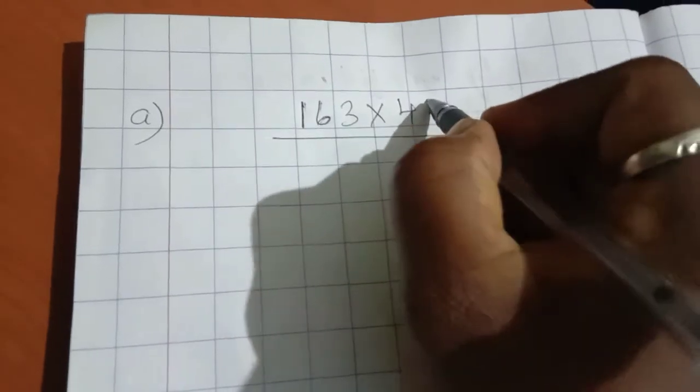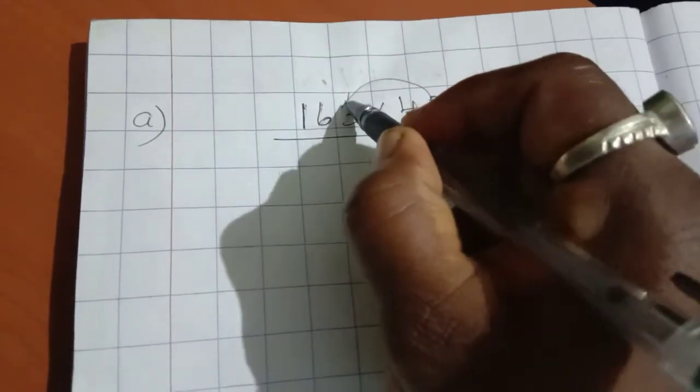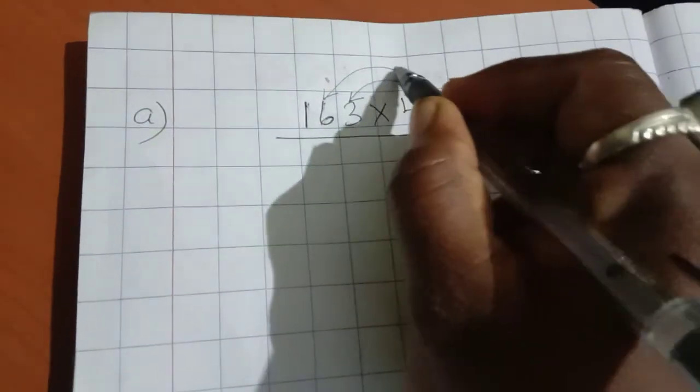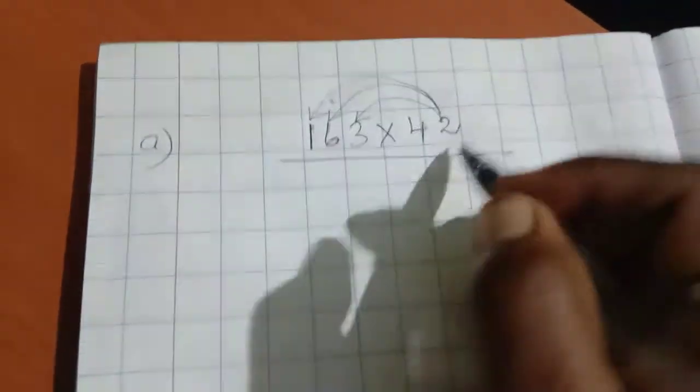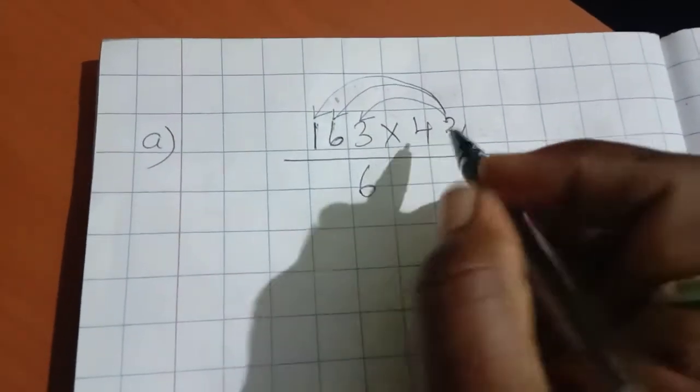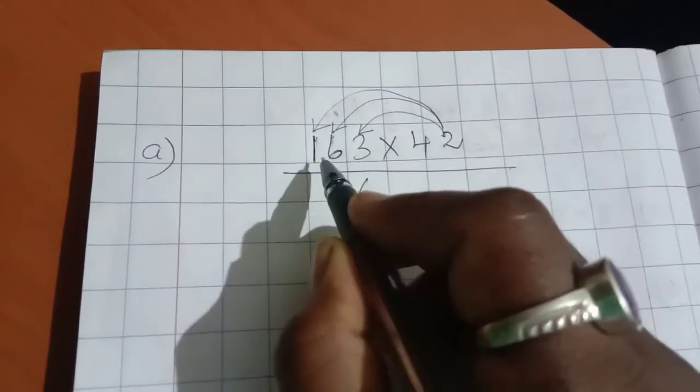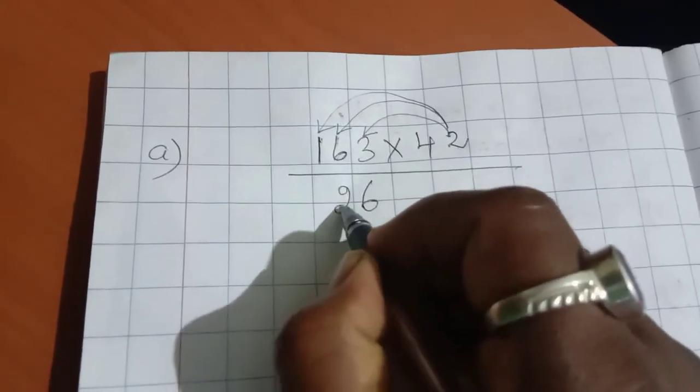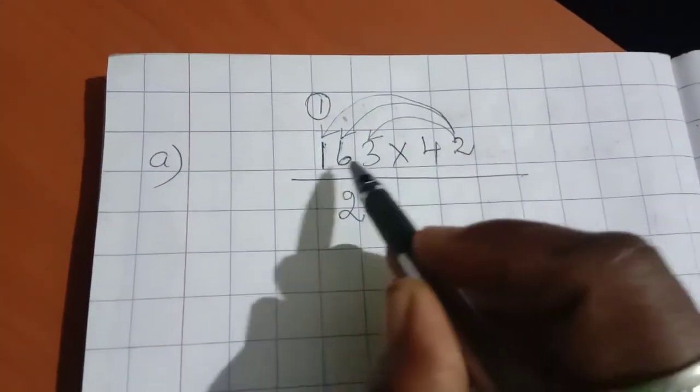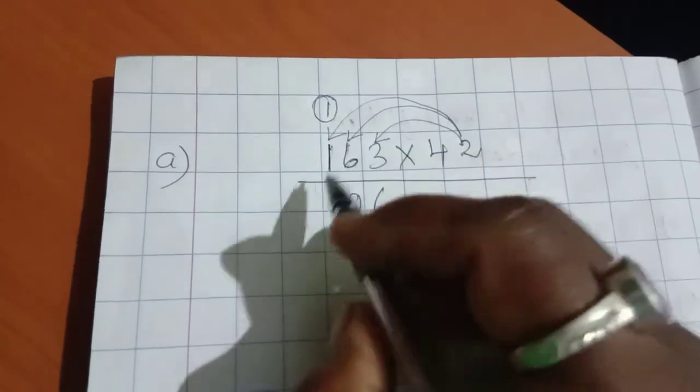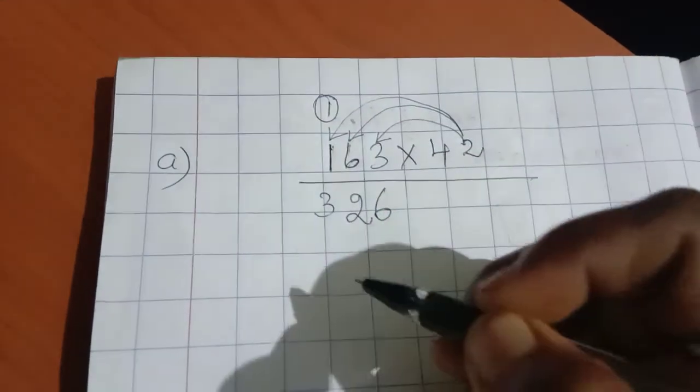First we are going to multiply by two. Three twos are six, and six twos are twelve. Write the two and carry over the one. Two ones are two, plus one equals three. We have written.